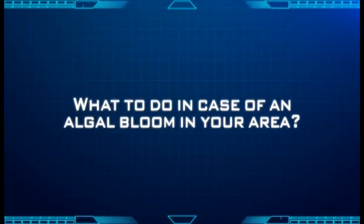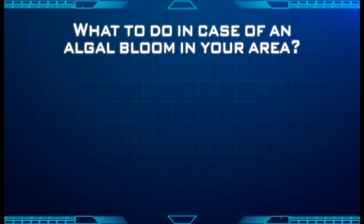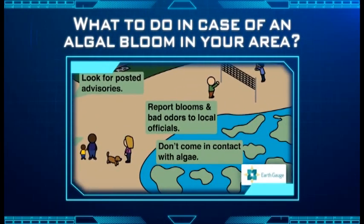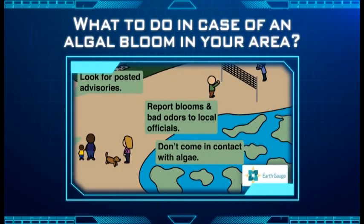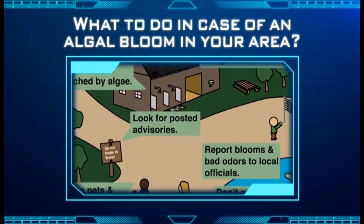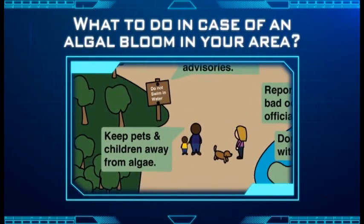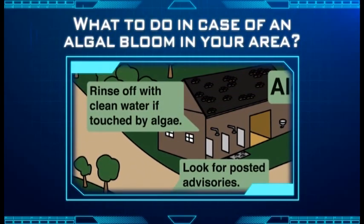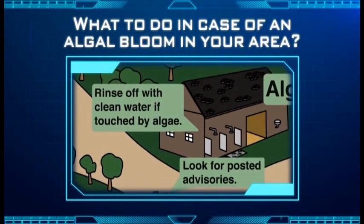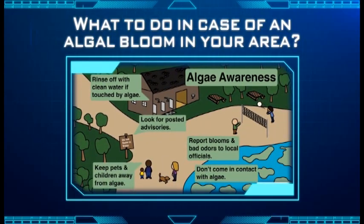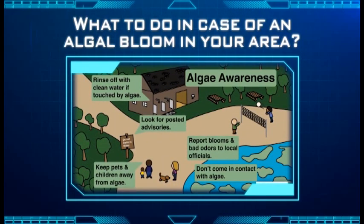What to do in case of an algal bloom in your area: When you notice a bloom in your area, report the blooms and bad odors to local officials if you haven't noticed any posted advisories. Keep pets and children away from the algae. Rinse off with clean water if touched by algae. Also, avoid consumption of contaminated seafood.